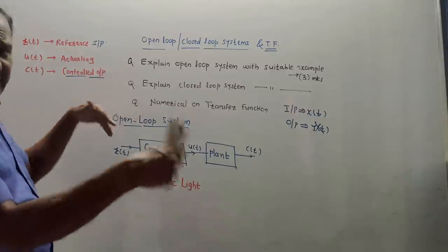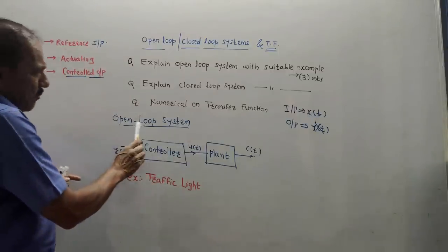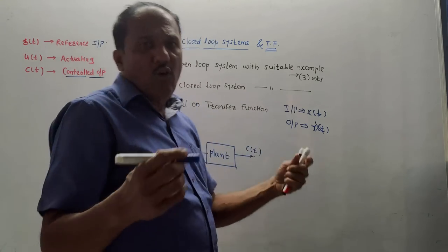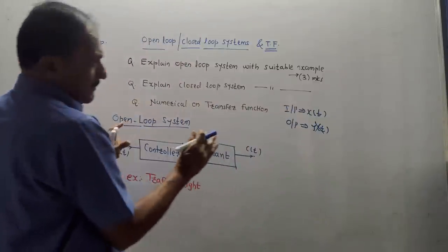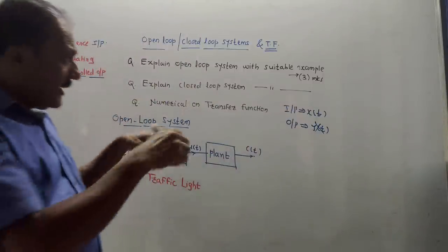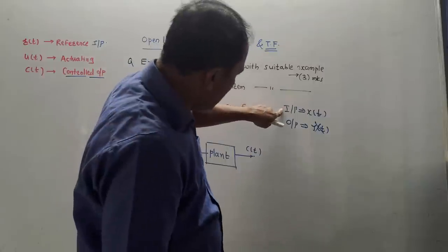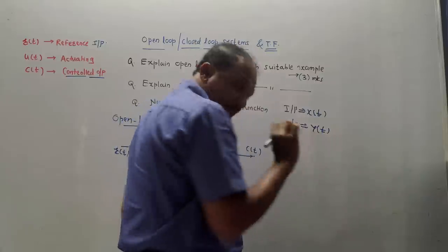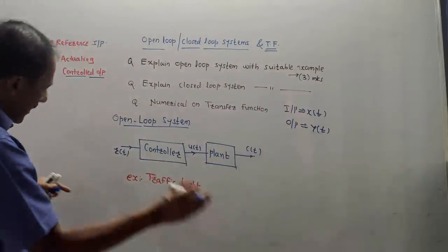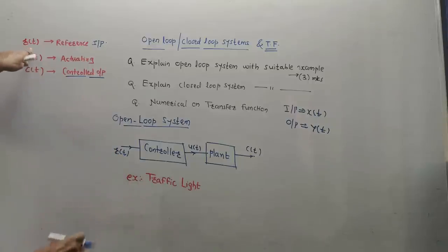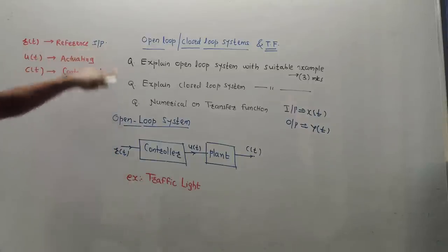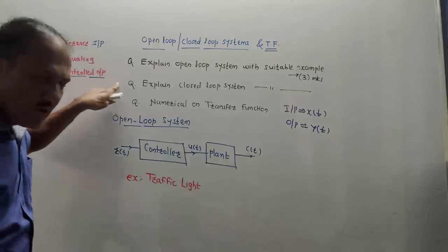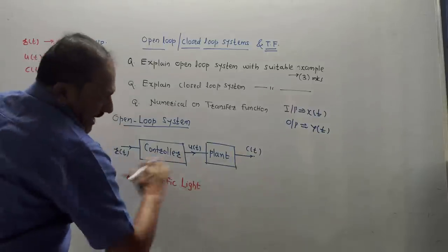Without wasting time, let us start the session. First part is open loop system. Before studying the system you should be aware of the notations. In control systems, certain different notations are used. In other subjects like signals and systems, input is denoted by x of t and output by y of t. Whereas in control systems, input is denoted by r of t, known as reference input, and output is denoted by c of t, known as controlled output. These are the two standard notations.